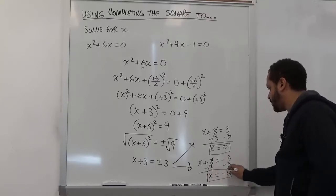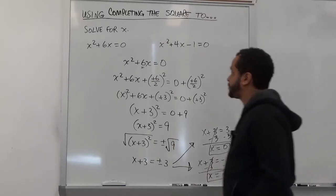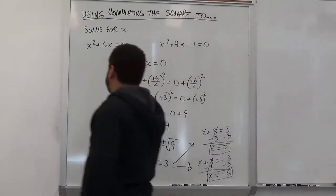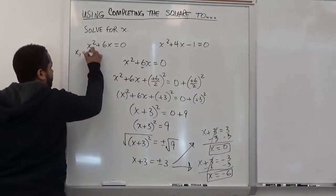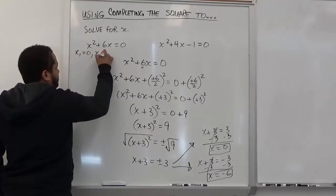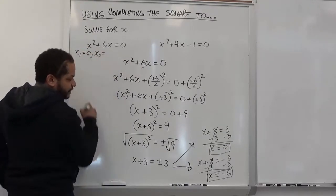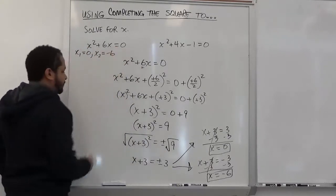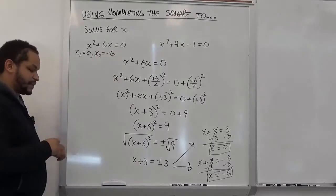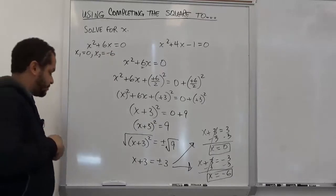Here we have the two solutions for completing the square: x₁ equals 0 and x₂ equals negative 6. And we have our first set of solutions for this problem.